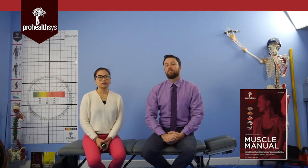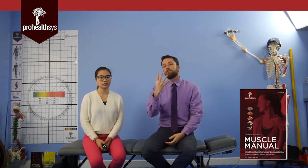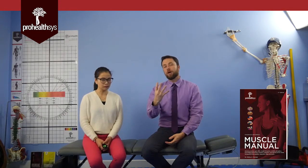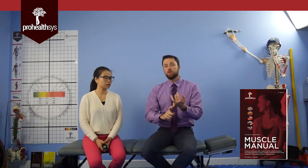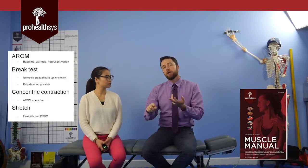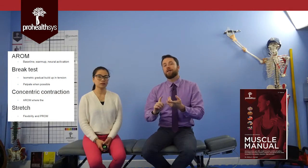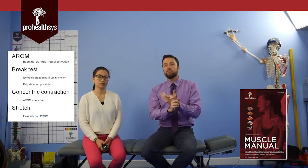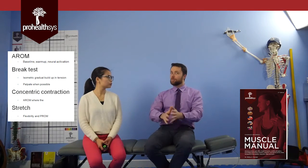So the key thing to get for muscle testing — it is a four-part process. What are the four parts? Active range of motion, then we proceed to a break test, then we go to a concentric contraction, and lastly we check muscle length with a stretch. Let's break those down a little bit.